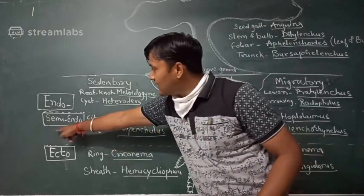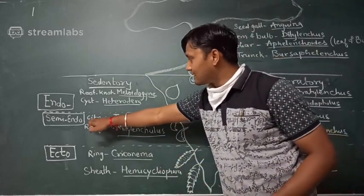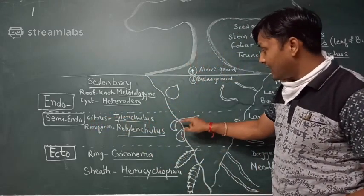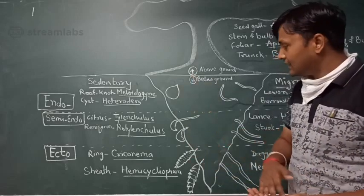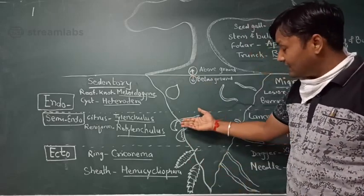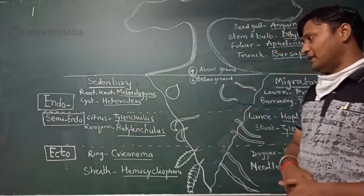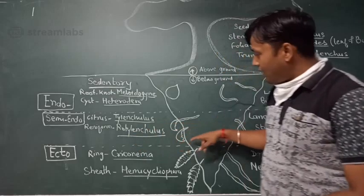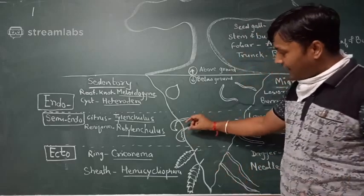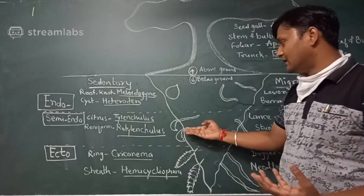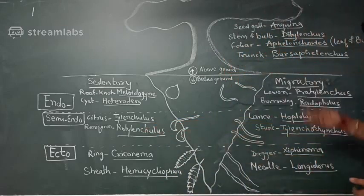Under semi-endoparasitic sedentary nematodes, the citrus nematode Tylenchulus semipenetrans is a key example. It has a very long neck within the plant tissue and exhibits sexual dimorphism — the female is pouch-shaped and cannot move. Similarly, the reniform nematode is kidney-shaped due to sexual dimorphism, with the head region inside the plant tissue, making it sedentary.